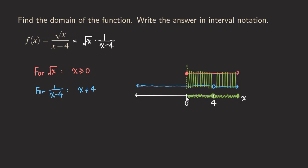Remember that we cannot take four, so we are going to get an open circle at four. And then for zero, we also want to include that — we use a solid dot here, because the square root of x is defined at zero and one over x minus four is also defined at zero. So we can include the zero.